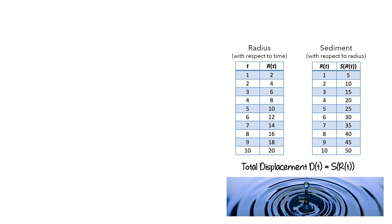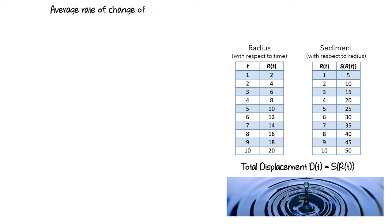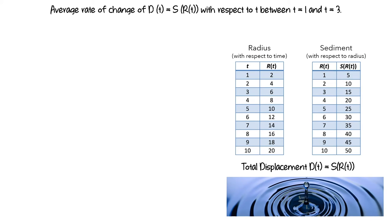For example, at a radius of six inches, thirty cubic inches of sediment have been displaced. Our task is to determine the average rate of change of d of t with respect to t as t varies between one second and three seconds.